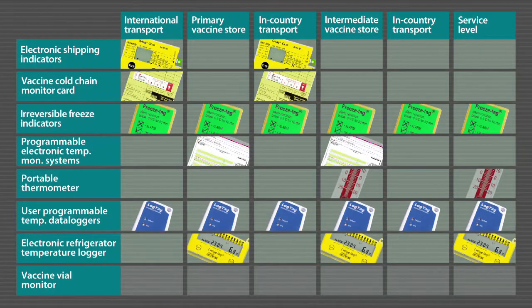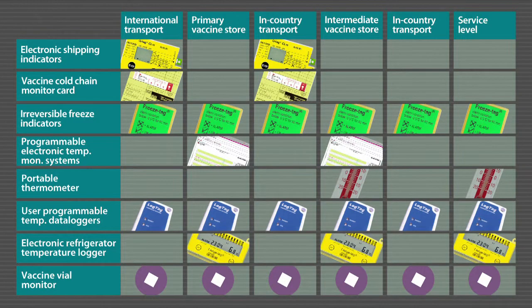Now let's come to VVM. Vaccine vial monitor, or VVM, is the only tool among all temperature monitoring devices that is available at any point in the cold chain process — whether in international shipment, storage in primary or intermediate store, in a health center, or transport within the country. There will always be two temperature monitoring devices: one being the vaccine vial monitor and something else. This is what we are going to analyze — how to come to a decision from the point of VVM.